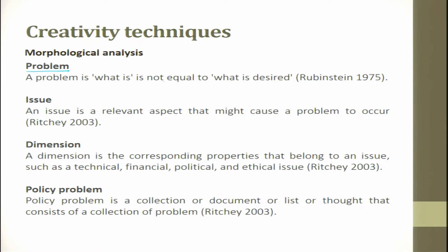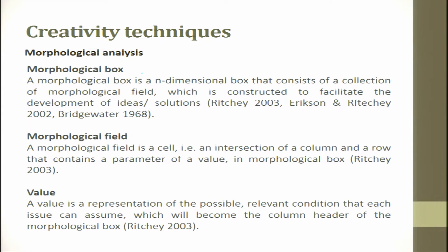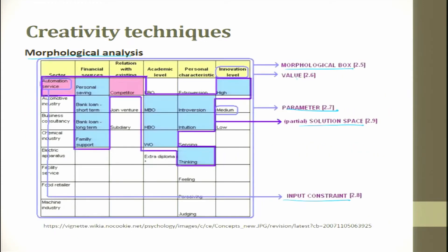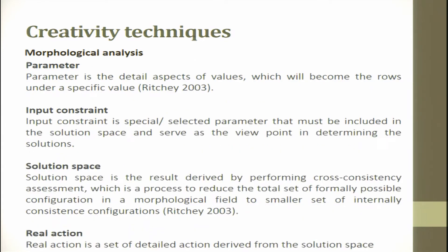In morphological analysis, a problem is what 'is' not equal to what 'is desired.' An issue is a relevant aspect that might cause a problem to occur. A dimension is a corresponding property belonging to an issue — such as technical, financial, political, or ethical. A policy problem is a collection of problems. A morphological box has a morphological field and values. A value is a representation of a possible relevant condition each issue can assume, which becomes the column header of the morphological box. You also have parameters, input constraints, solution space, and real actions.